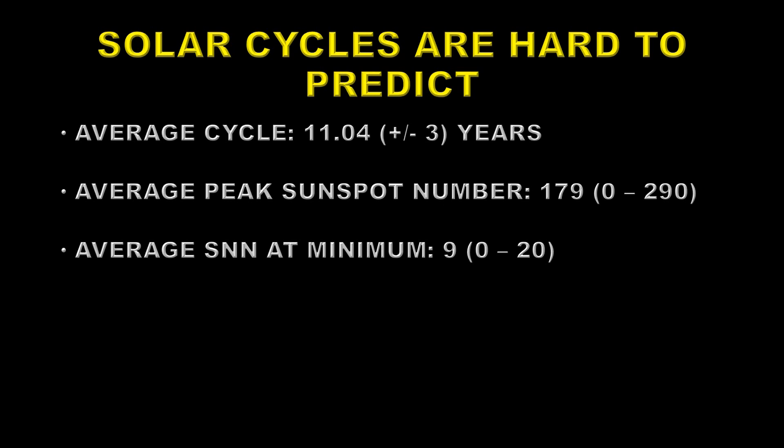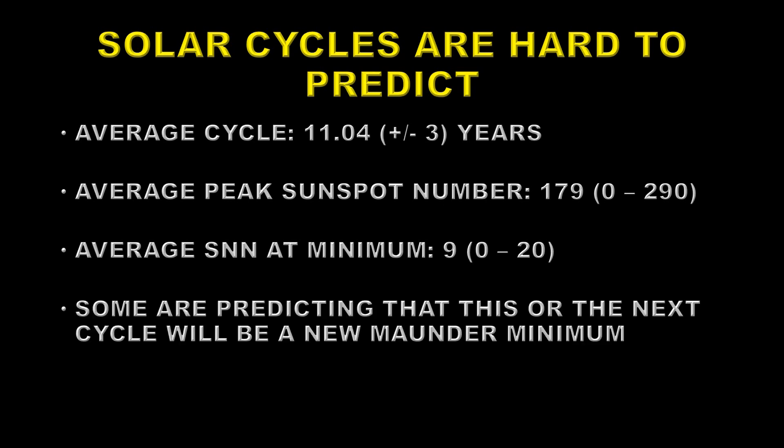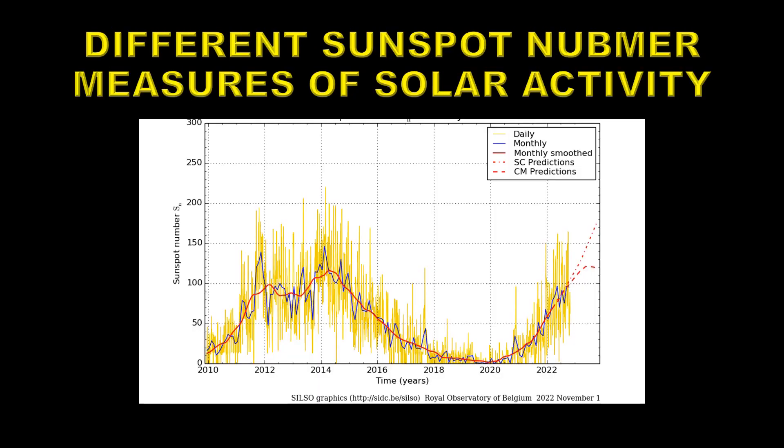So even predicting the sunspot number at minimum is fairly difficult. Some people are even predicting that very soon we're going to go into a new Maunder Minimum — a new grand solar minimum. I take this with a great pinch of salt and think it's unlikely, for reasons that will become apparent. Let's take a look at the last one and a half cycles of solar data and see what we can understand from that.